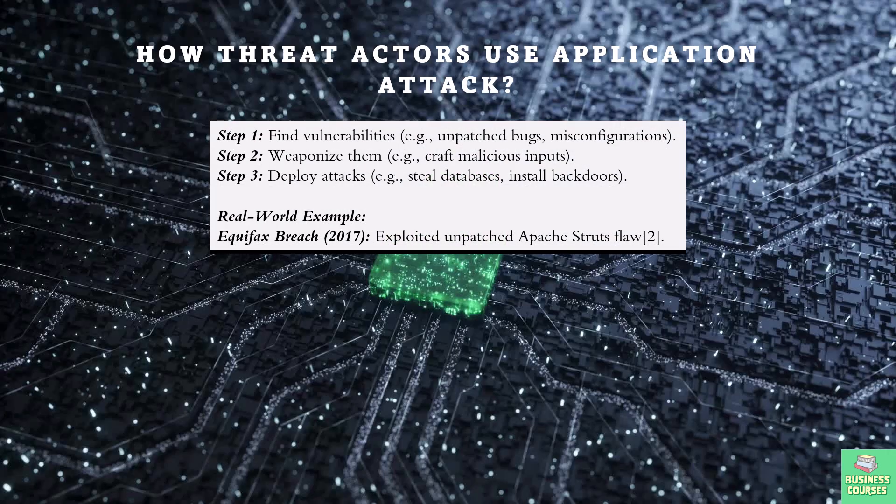Here's how hackers turn application flaws into paydays. First, they scan for vulnerabilities — maybe a missed patch or a developer who forgot to sanitize user inputs. Then they weaponize it, for example by uploading a malicious script to a forum that lets users post images. Finally, they strike — stealing credit card information, defacing websites, or using the app to spread malware. Remember Equifax? Hackers stole 147 million records because of one unpatched flaw.